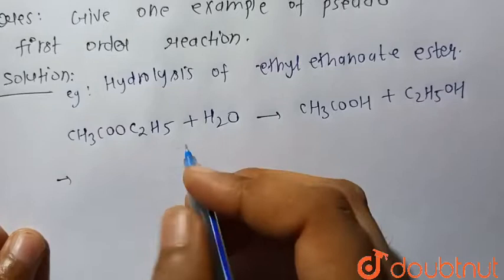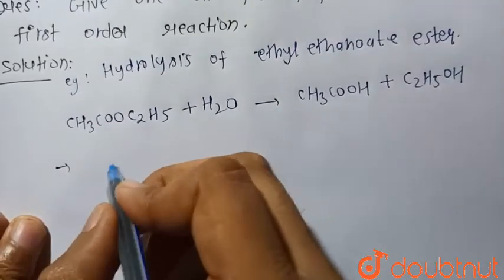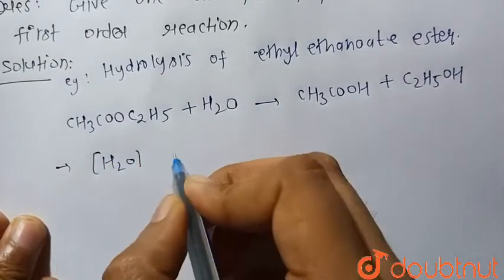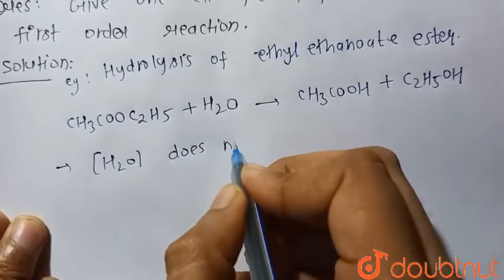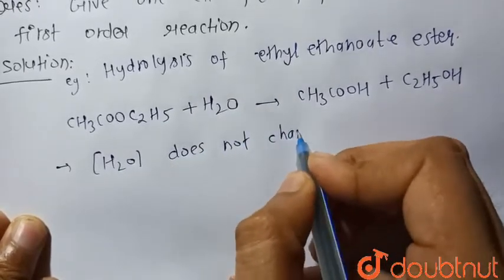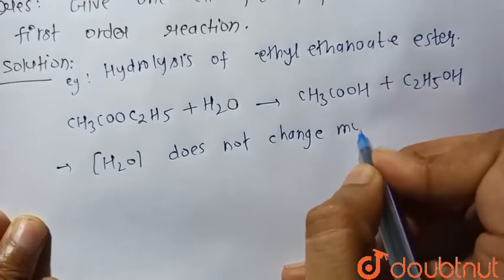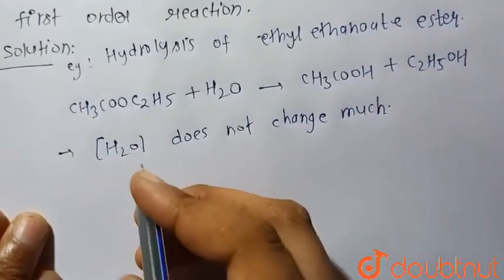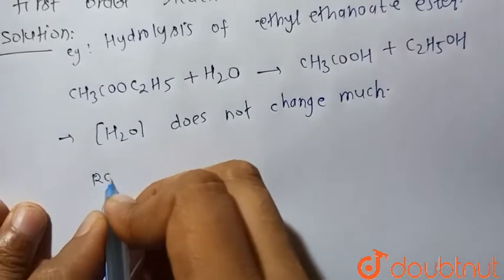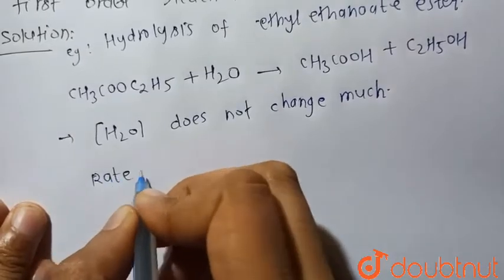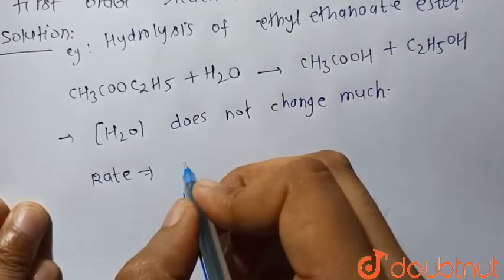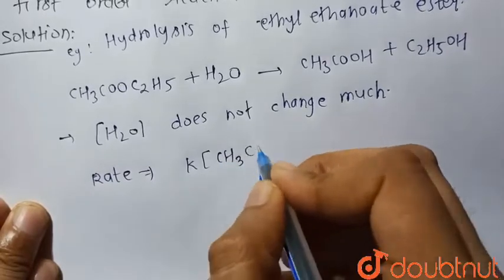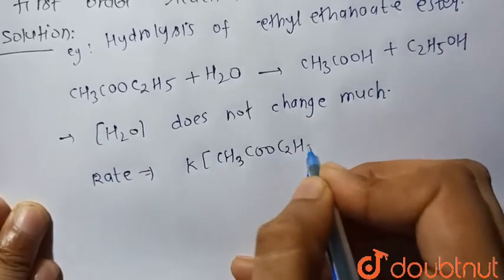So here, the concentration of water (H2O) does not change much. So the rate expression can be written as K times [CH3COOC2H5], where K is the rate constant.